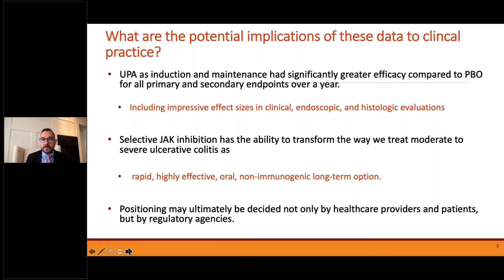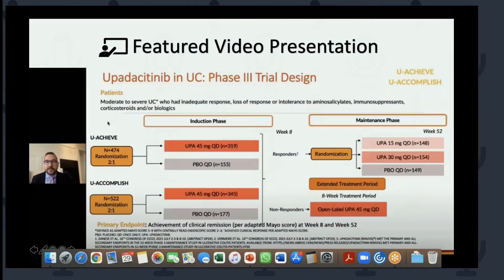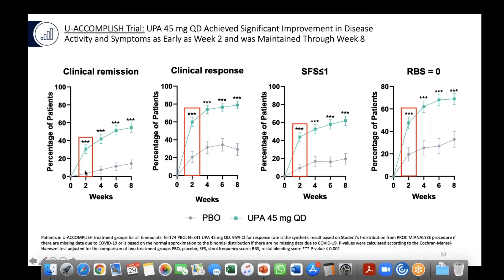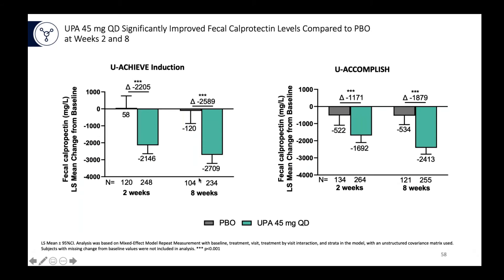Returning to highlight some additional data from upadacitinib: the drug works quite quickly. Week 2 data versus placebo clearly shows, irrespective of the endpoint used, that the drug works rapidly. It also significantly lowers calprotectin across both induction studies.